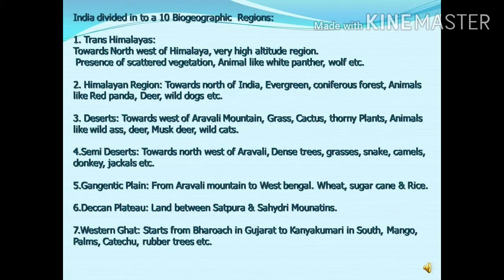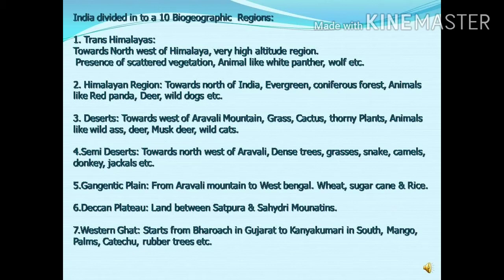These ten biogeographic regions are determined by considering different factors: the amount of rainfall, the quality of soil, and geographical and climatic factors present there. The Trans-Himalaya is towards the northwest of the Himalayas. This is a very high-altitude region with a scattered kind of vegetation. Animals like the white panther and wolf can be seen here. Most of the region is covered with snow.